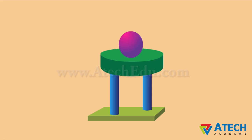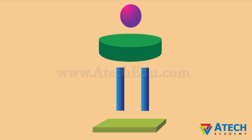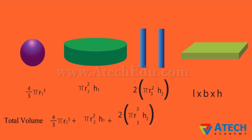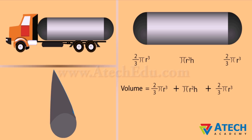Let us consider this solid. This solid is a combination of many small solid shapes. To calculate the total volume of this object, we will have to find the volumes of each of the solid shapes separately and add them.